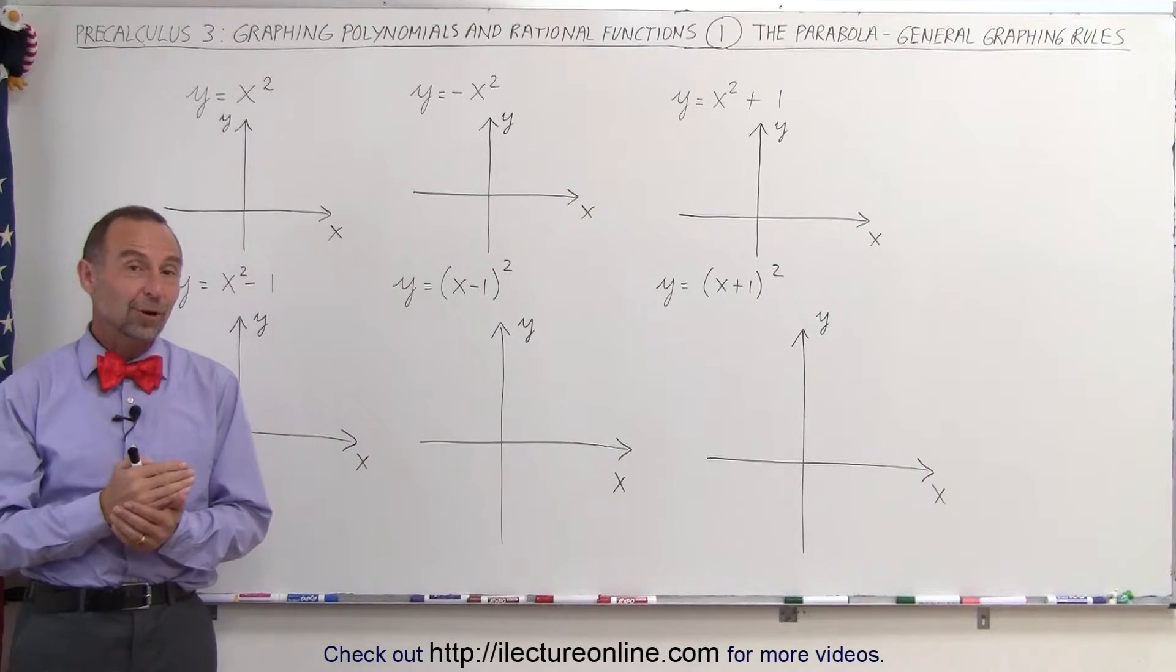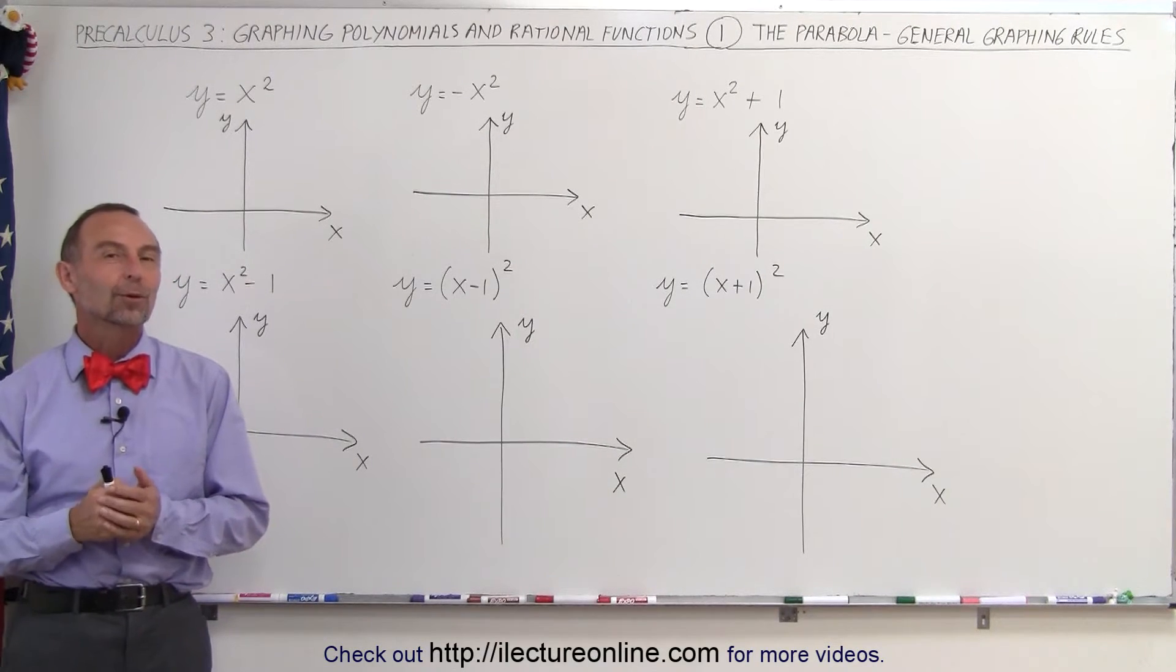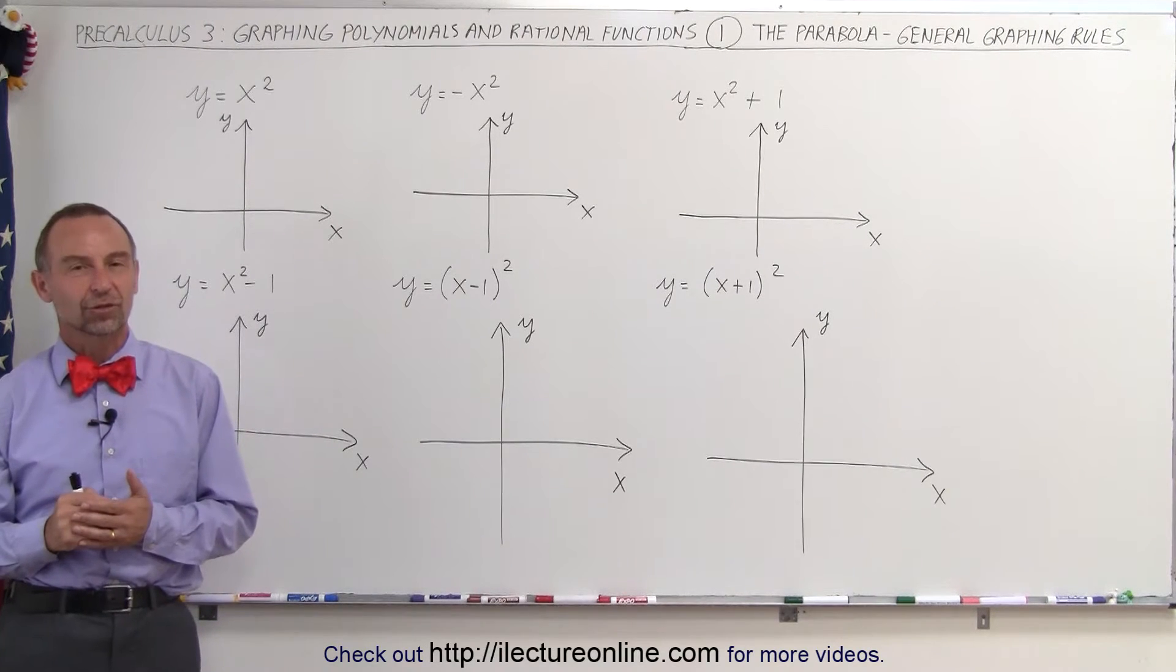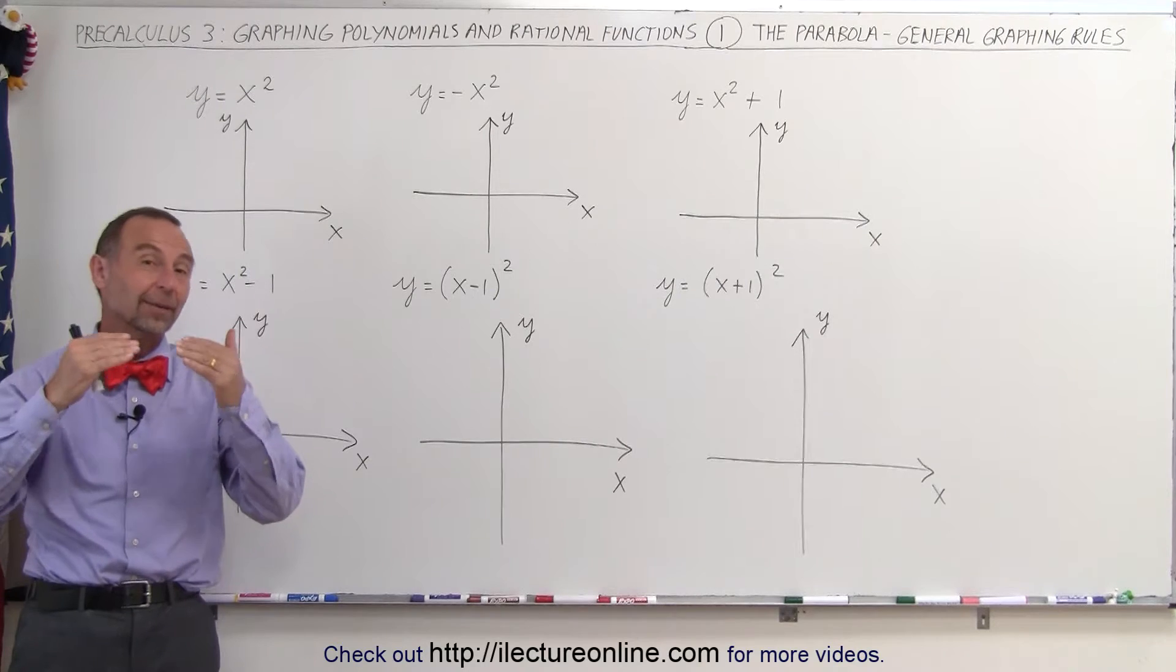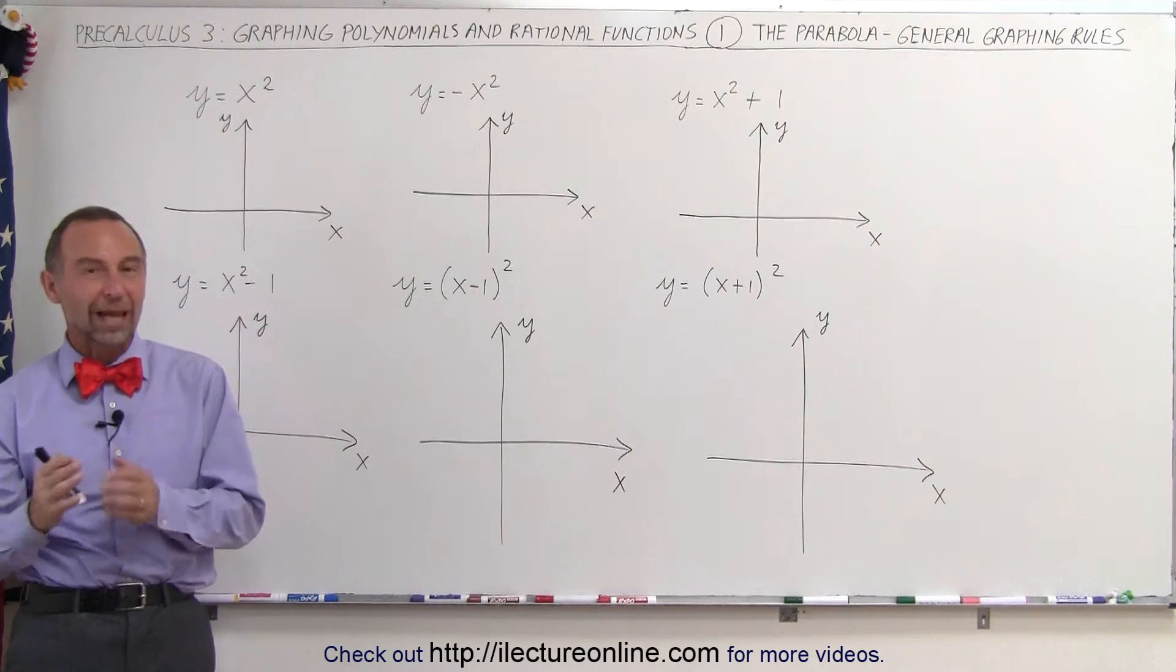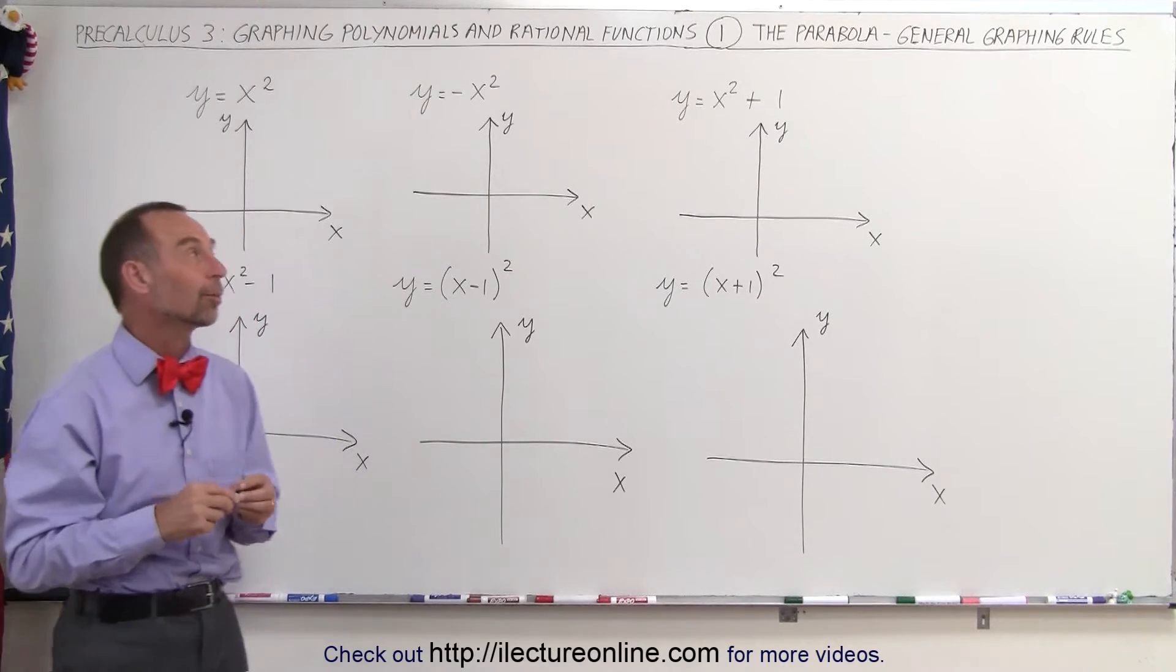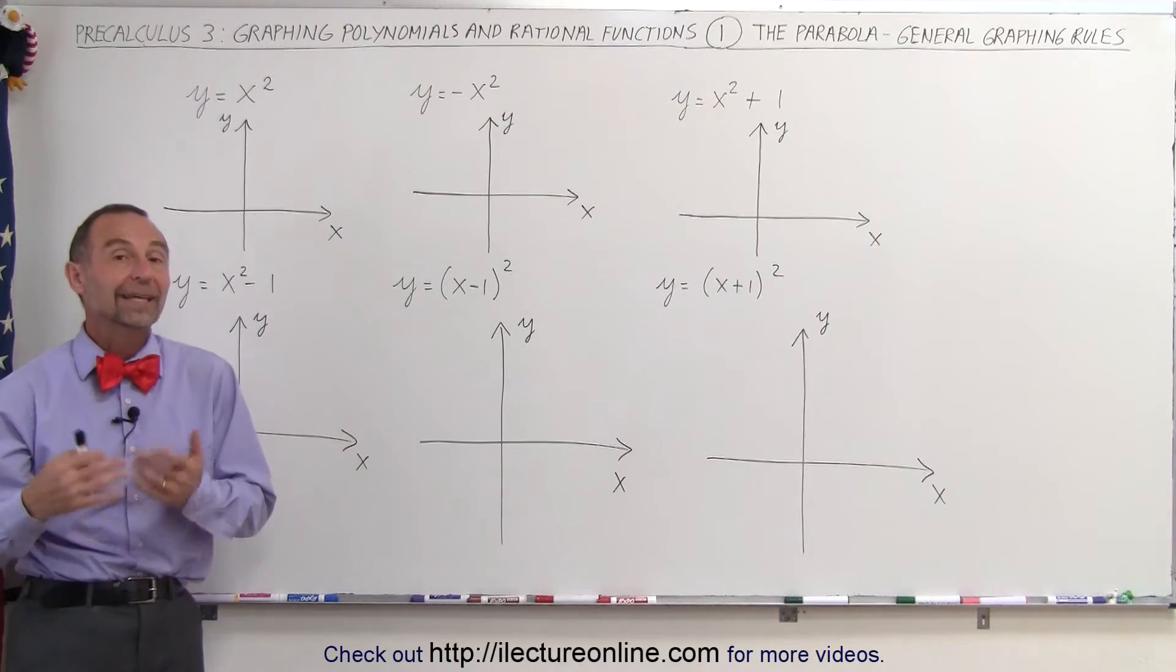Welcome to ElectronLine. In this video, and many videos to come, we're going to learn how to graph polynomials and rational functions. That's where we have one function divided by another function, and so we have to deal with asymptotes and things like that. But before we get there, let's talk about some basic principles of graphing, and let's start with a very easy one.